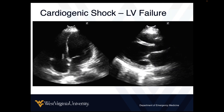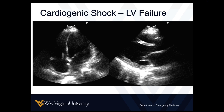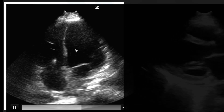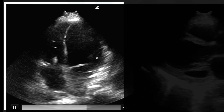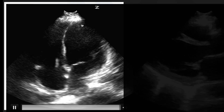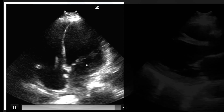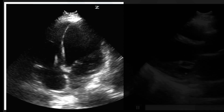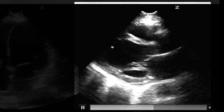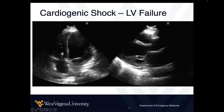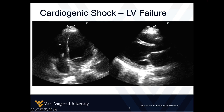Just a few more examples of classic pump failure cardiogenic shock. We see dilated left ventricles, not a lot of change in shape during systole. We see poor opening of the mitral valve, also demonstrated here very well — not a lot of change in shape. So these are pretty obvious signs of left ventricular failure.